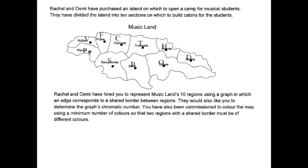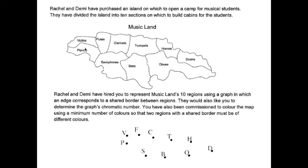You have also been commissioned to color the map using a minimum number of colors so that two regions with a shared border must be of different colors. I put a little dot in the center of each one of these sections, basically making a dot for violins and a dot for pianos, representing this map. Violins are attached to piano, so I'm going to put a line there. Violin is attached to flutes, and pianos are attached to flutes. The piano section is attached to the saxophone section. But notice the piano is not attached to the clarinet, so I'm not going to have a line between piano and clarinet.